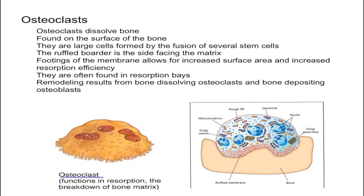As you can see in this diagram to the bottom right, there are five different nuclei, all from different stem cells. Typically osteoclasts can have as many as 200 nuclei, although some may only have 5 to 20. For example, this one only has 5 nuclei.